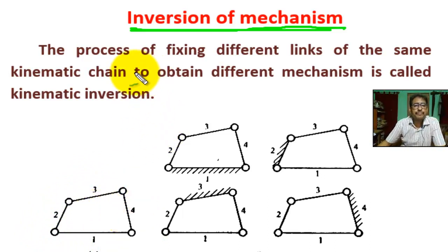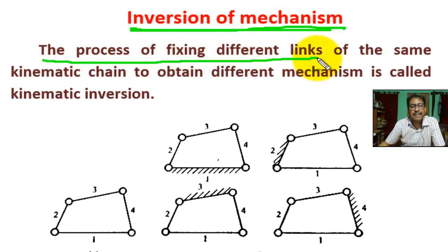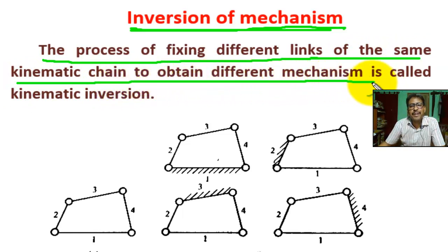Now, the process of fixing different links of the same kinematic chain to obtain different mechanisms is called kinematic inversion.